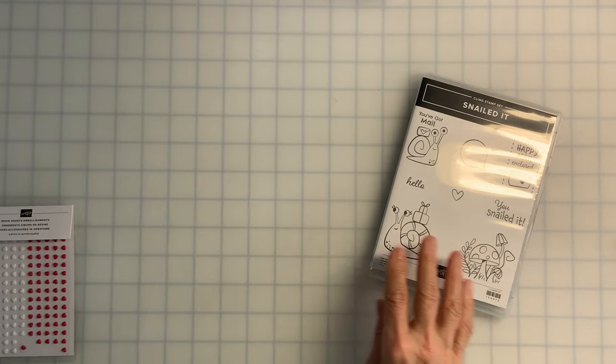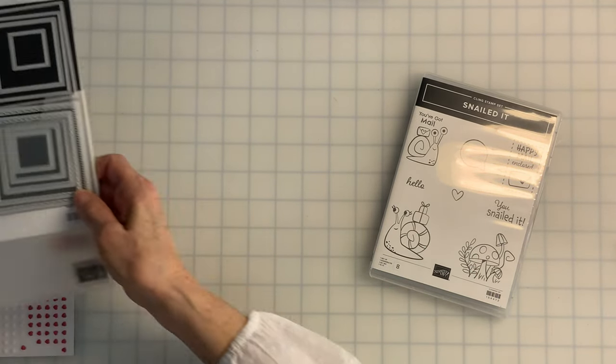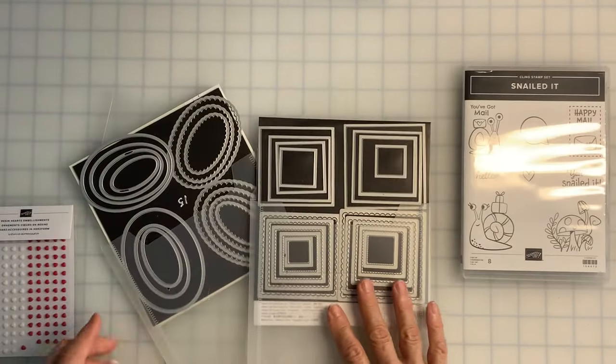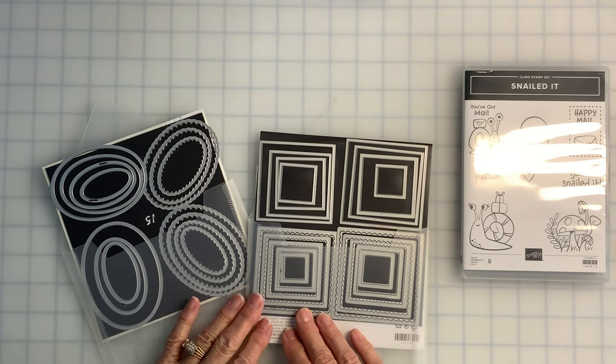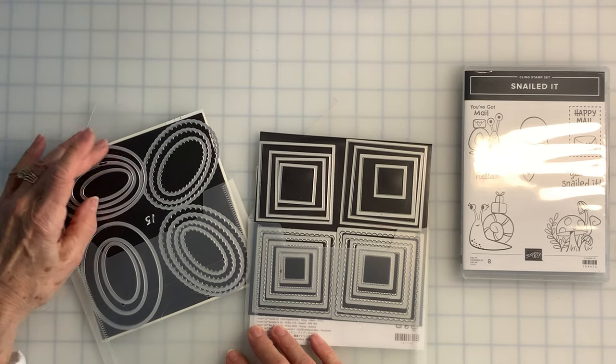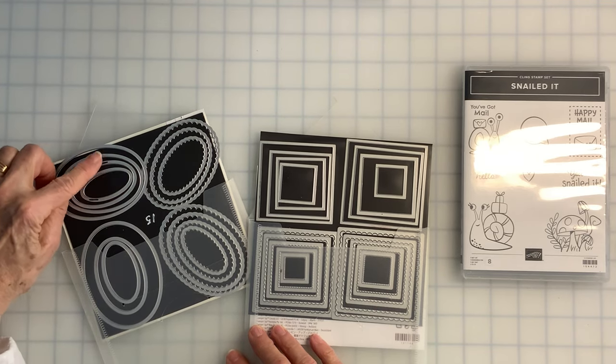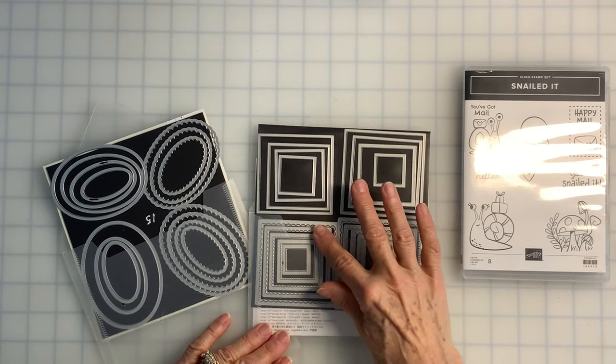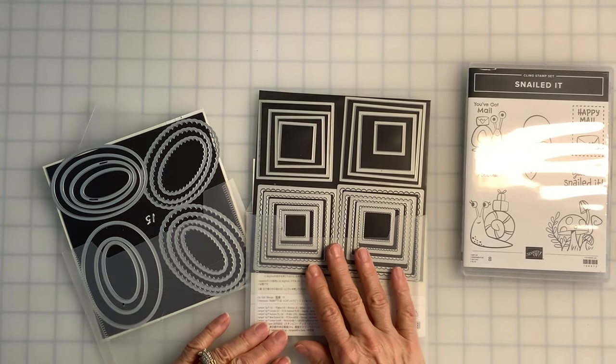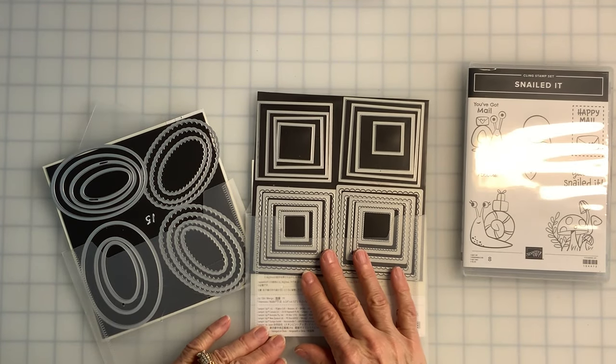And I will need some nested framelits. I have both the square and the oval framelits. I have really gotten my money's worth out of both these sets because I have the nested sizes of both plain ovals and scallop ovals, plain squares and scallop squares. So I have a lot of variety here, and a size for almost every project.